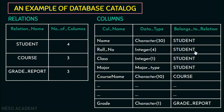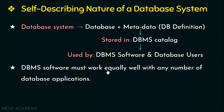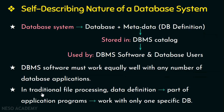Now, DBMS software must work equally well with any number of database applications — for example, a university database, a library database, or a banking database. As long as the database definition or metadata is stored in the catalog, DBMS software must work efficiently with any number of database applications. Whereas in traditional file processing, metadata is part of the application programs itself, so they work with only one specific database application because the structure is declared in the program itself. Unlike DBMS, they cannot work with more than one database application.